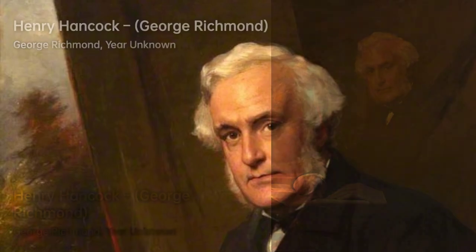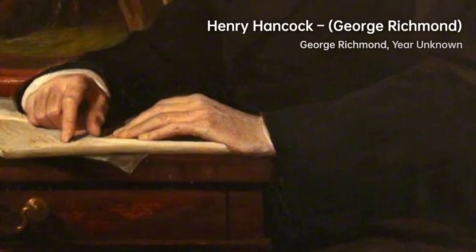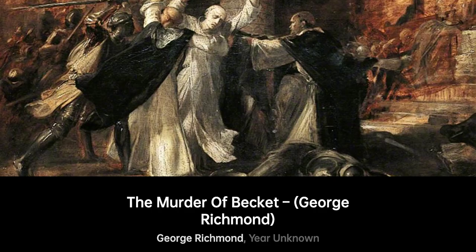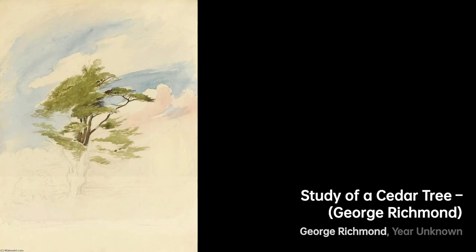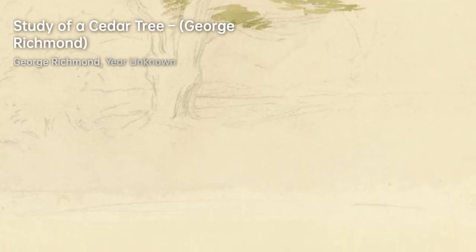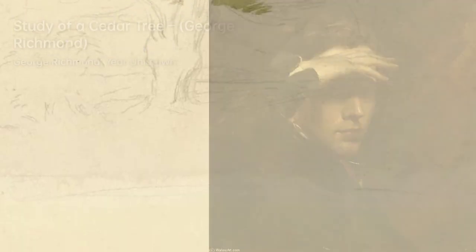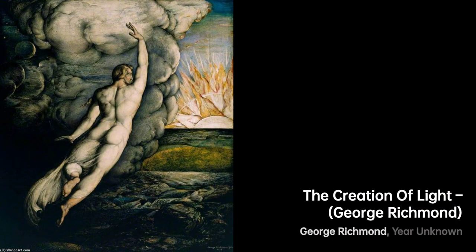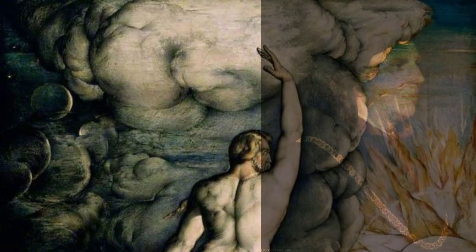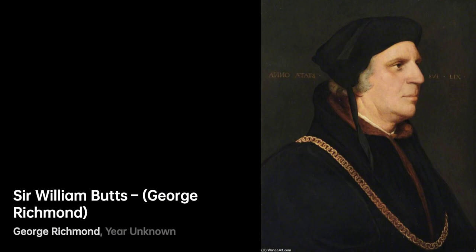It was at the Royal Academy that he was influenced by the renowned painter Henry Fuseli. He also formed a lifelong friendship with Samuel Palmer and had fellow artists like Edward Calvert and Thomas Sidney Cooper as his companions. Under the guidance of Henry Fuseli, George Richmond honed his artistic skills and developed his own unique style, primarily focusing on portraiture and becoming well-known for capturing the essence and character of his subjects.